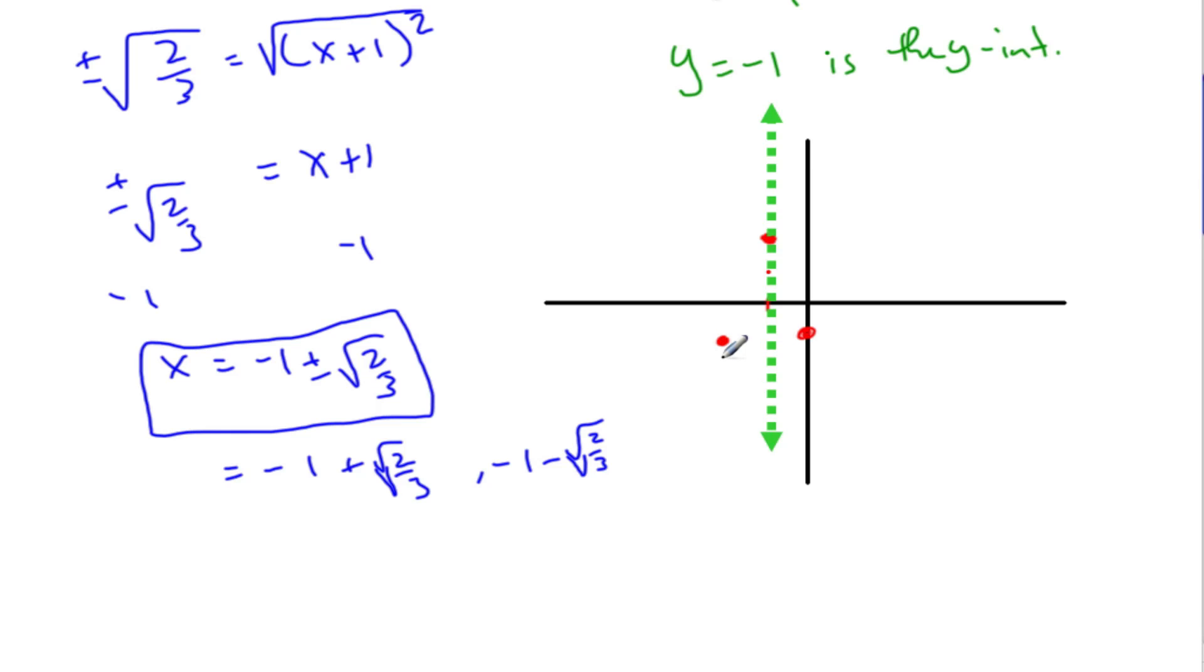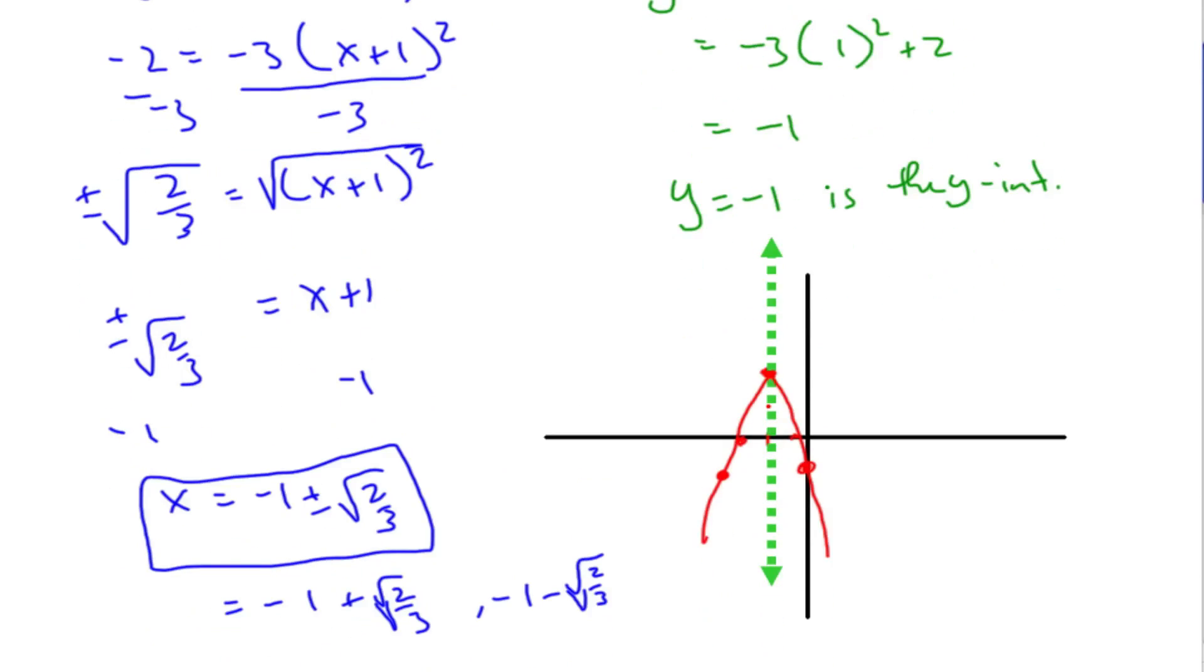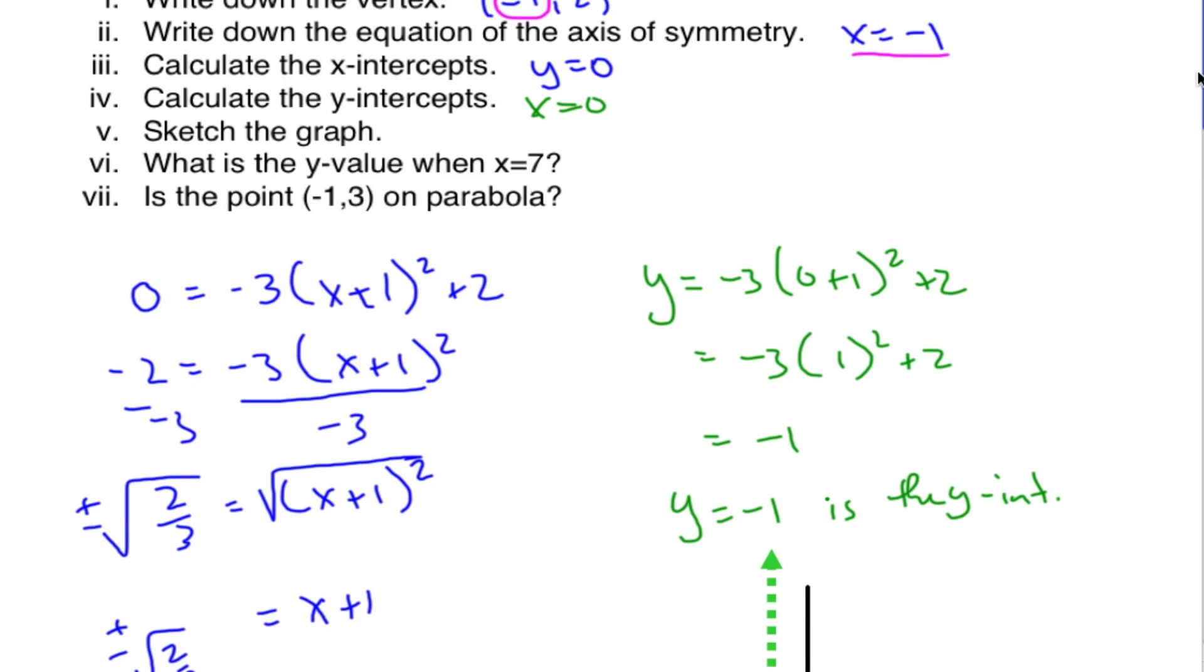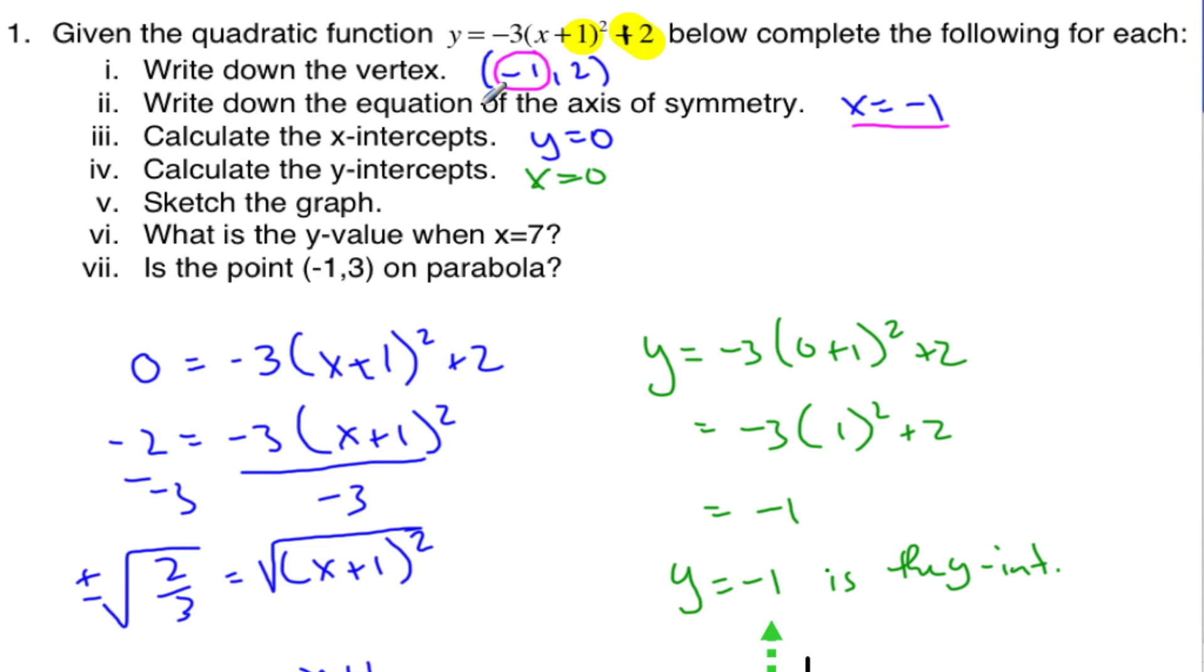And then I know my y-intercept is negative 1, so if I go here, now negative 1 is about right here. I know it's going through here. Symmetry says there's going to be another point somewhere over here - I can reflect that. Now my x-intercepts - I can estimate negative 1 plus a little bit which is less than one, and minus a little bit. The square root of 2/3 is smaller than 2/3, so my graph is going to be something like that. I know it's going to be upside down because it has a negative 3 out front. And we'll try and get it to look like a parabola, making sure it's getting steeper and steeper as we're going down.